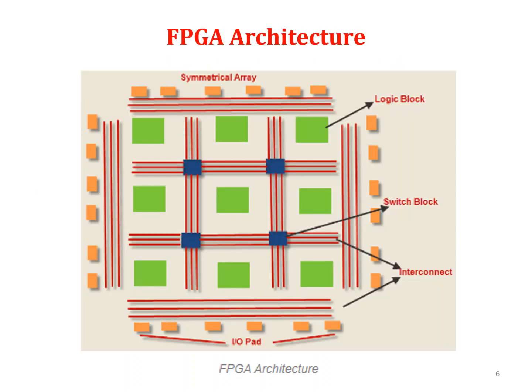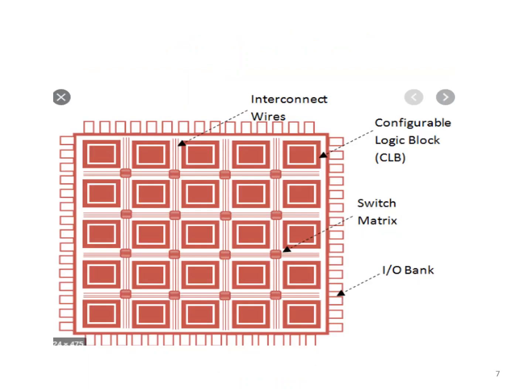We can see the FPGA architecture. The CLBs — configurable logic blocks — are arranged in rows and columns. These lines represent interconnects. The interconnects have a matrix, called the switch block or switch matrix. At the four edges, we have the IO parts with input, output, and pads. This looks like a symmetrical array with CLBs arranged row and column wise. In another view of the FPGA architecture, we can see interconnecting wires, switch matrix, IO bank, and CLBs — which may be called logic block, logic cell, configurable logic block, or logic module.